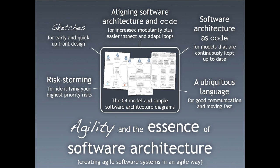So that's agility and architecture from a number of different perspectives. The diagramming stuff really is the core of everything I think about — diagrams allow me to sketch out ideas quickly and give me that ubiquitous language. If we're putting architecture information in the code, we can scrape and extract that out, which saves time in recreating and inspecting architecture diagrams. The risk storming allows us to look at the highest-priority risks and factor them in — at the start of a project, the end of an iteration, the start of a sprint. It's a continuous, evolving journey. Thank you very much — that's agility and architecture.